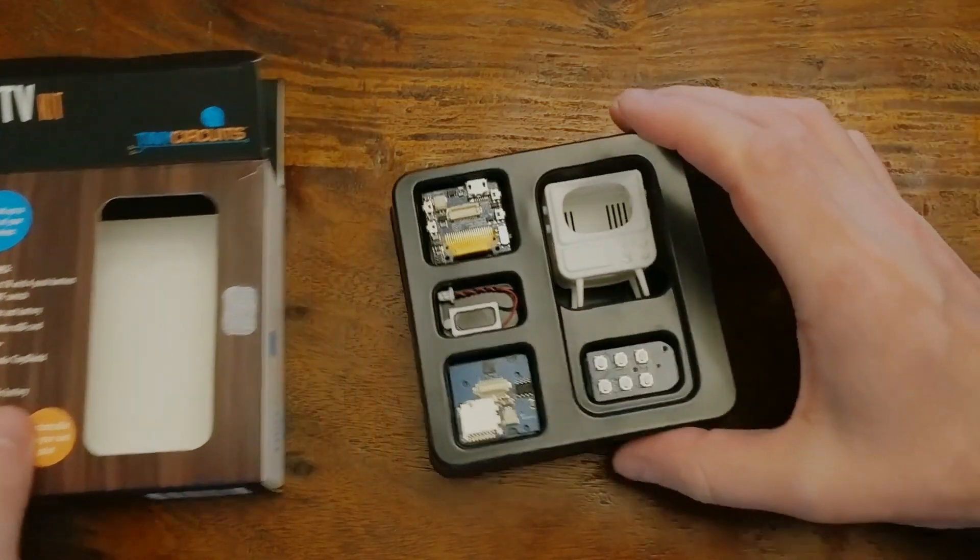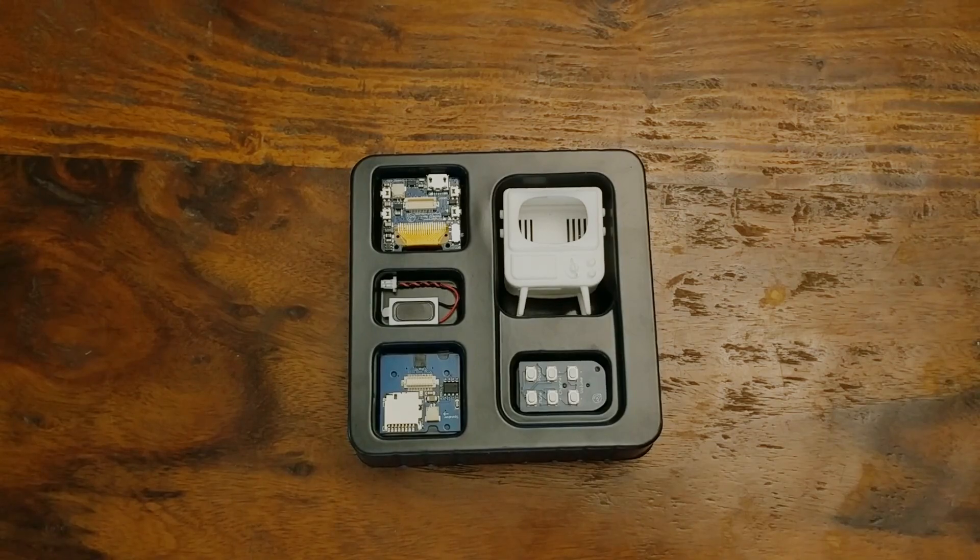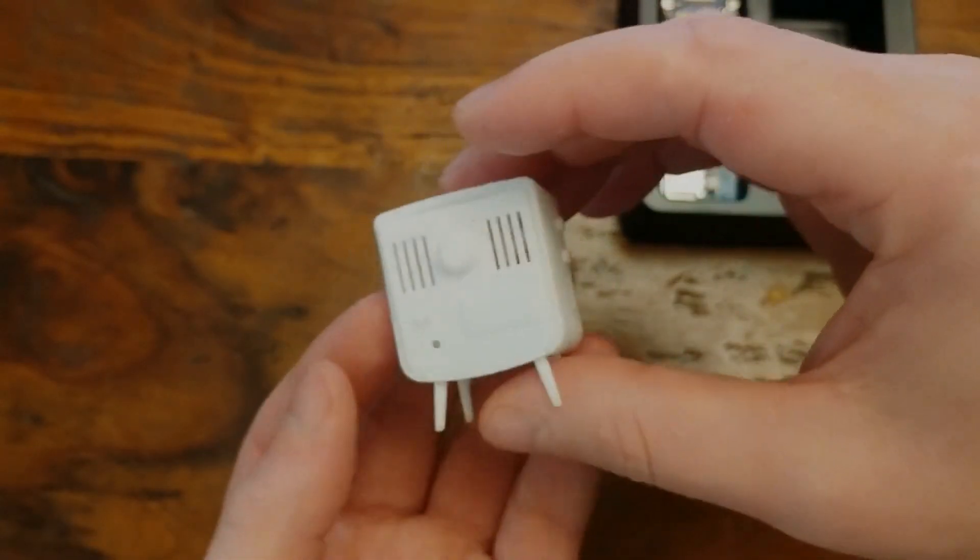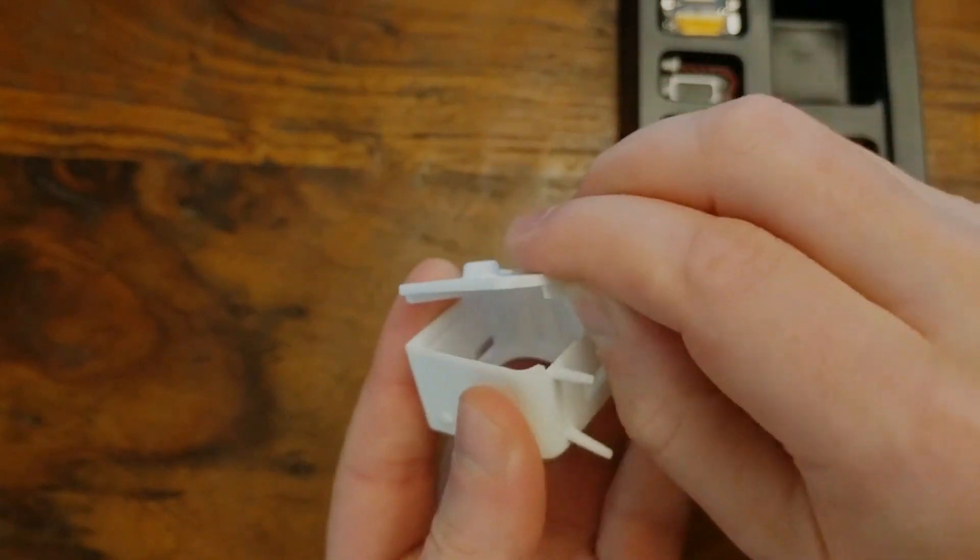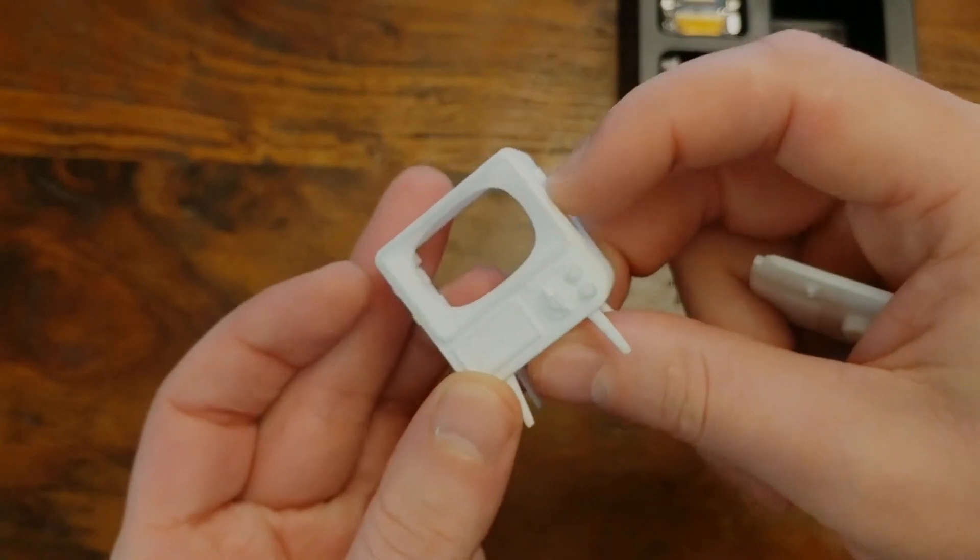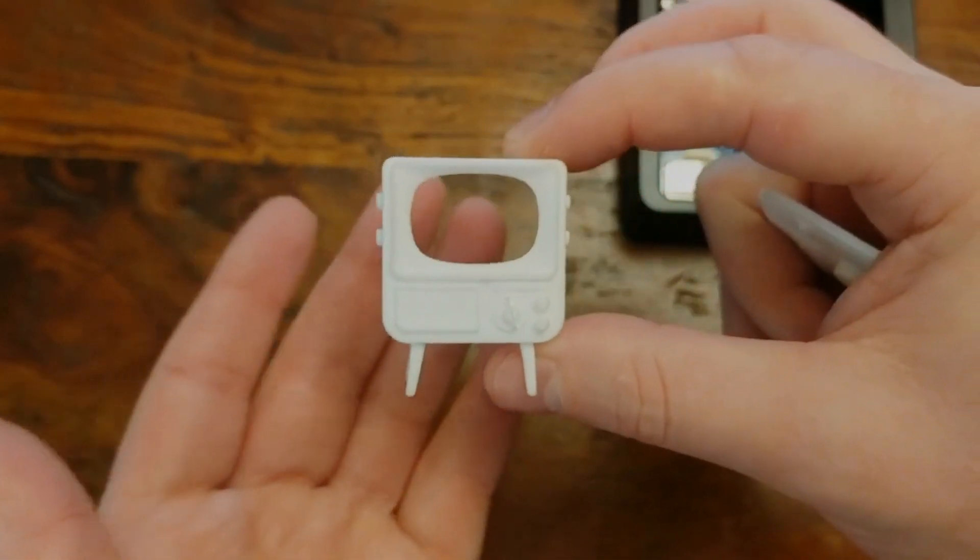First off, as you probably noticed, it does require a bit of assembly, but it comes with everything you need. So here's the TV case itself. It's a little 3D printed model of an old school TV. The back pops off so you can put all of the circuitry in here. These little buttons on the side do actually work if you don't want to use the remote control.